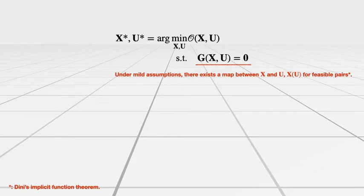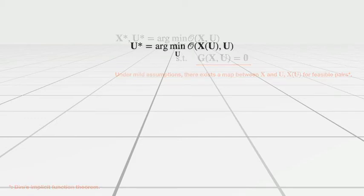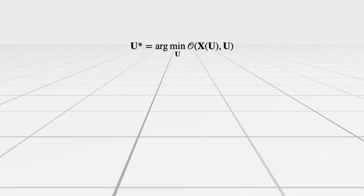Under mild assumptions, the constraint function implies there exists a map between X and U. Therefore, we can convert the constrained optimization problem into an unconstrained optimization problem in the form here.